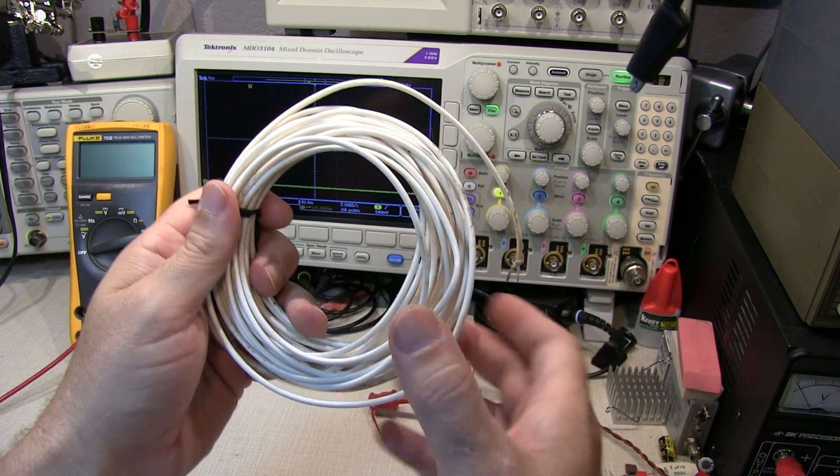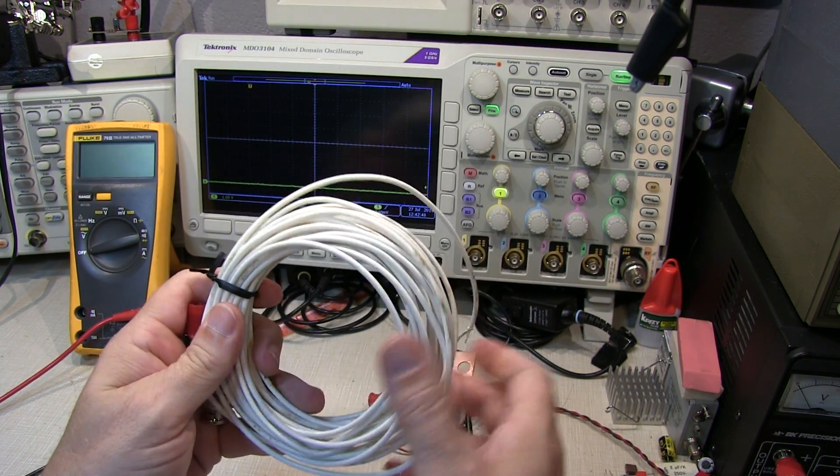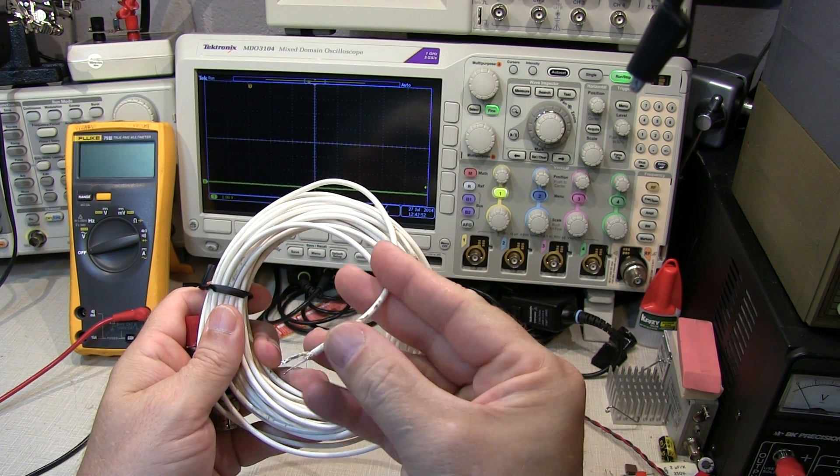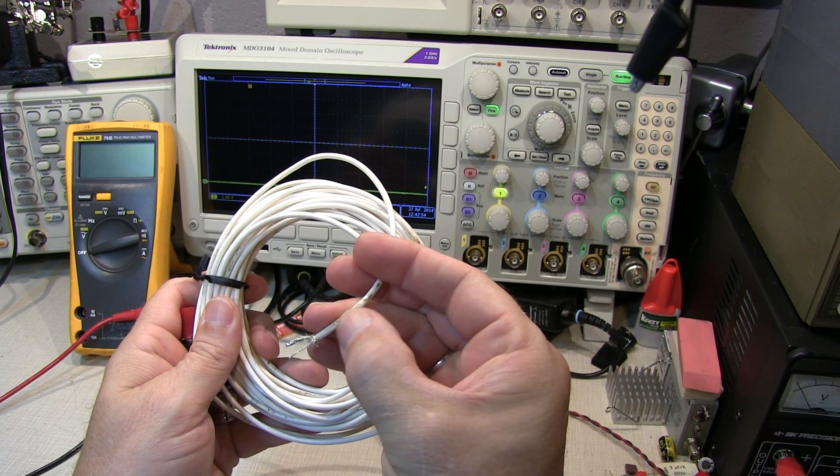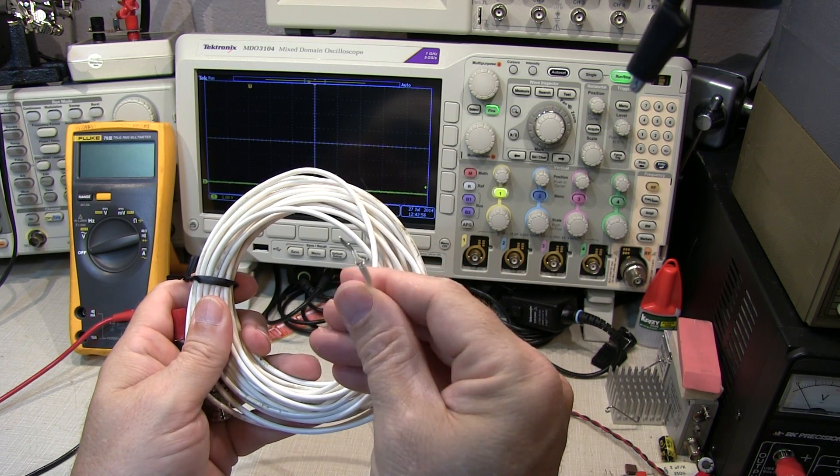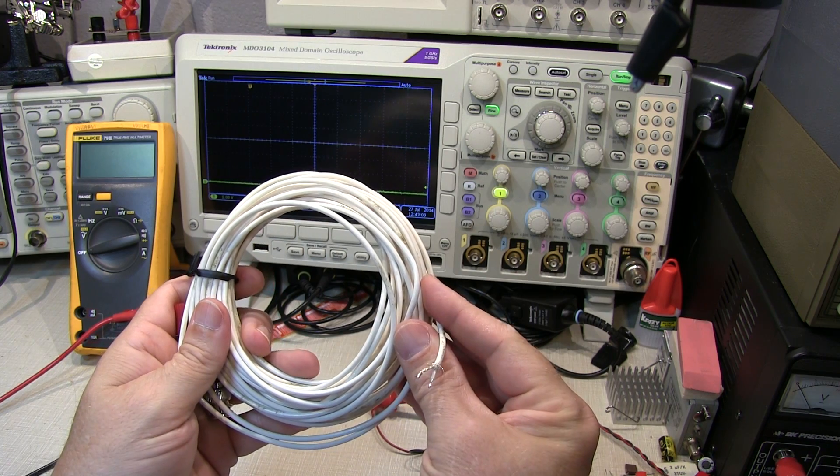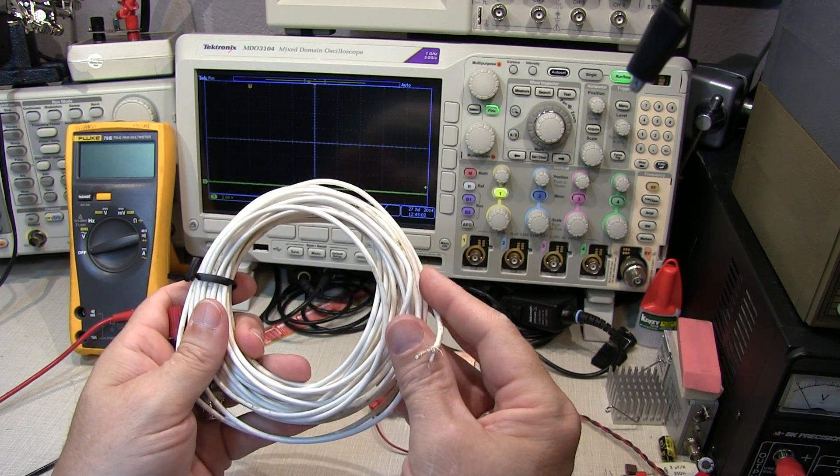I was at an antique radio flea market this weekend and picked up this hunk of coax. I grabbed it because the insulation on it seemed like it was nice heat resistant, like a Teflon. And that turns out to be the case, so I figured I'd want to characterize what its characteristic impedance is and what the velocity factor is.